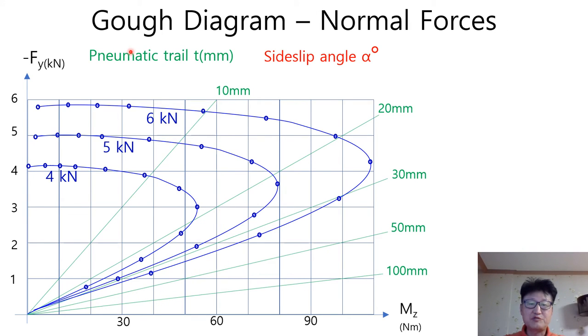Then, we can get this shape by marking and connecting the small circle corresponding each data for 4 kN, 5 kN, 6 kN. Furthermore, we can get the constant side-slip angle lines by connecting the same side-slip angles corresponding each tire normal force in this direction, like this.